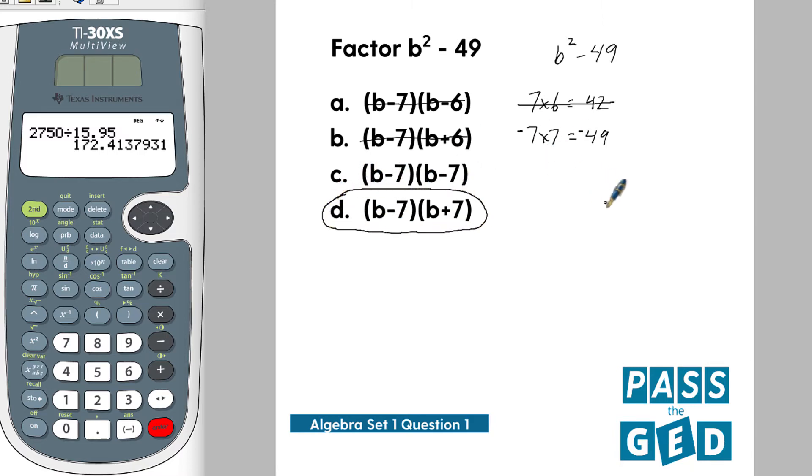Let me just show it to you another way. If you were to actually multiply the answer here together, would we get the question b squared minus 49? I like to do these like they're punnet squares. So let's put b minus 7 up here and then b plus 7 here.